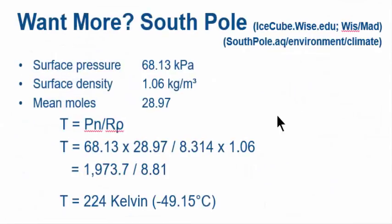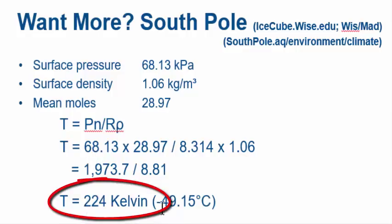Okay, keep going while we're hot. South Pole, middle of Antarctica. Data from IceCube, University of Wisconsin Madison. South Pole environment, climate. Surface pressure, average, 68.13 kPa. Average surface density: 1.06 kg per cubic meter. Mean molecular weight: 28.97, same everywhere on Earth. Bang them in here. Bingo, 224 Kelvin, which is in English minus 49 centigrade.